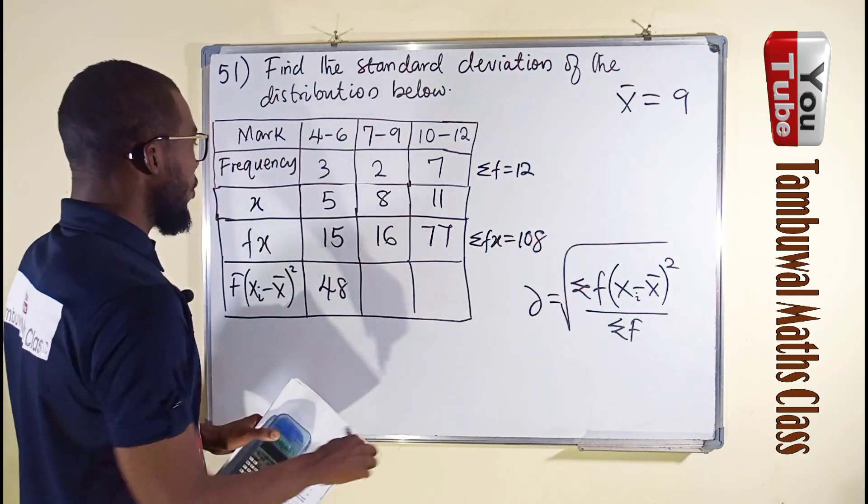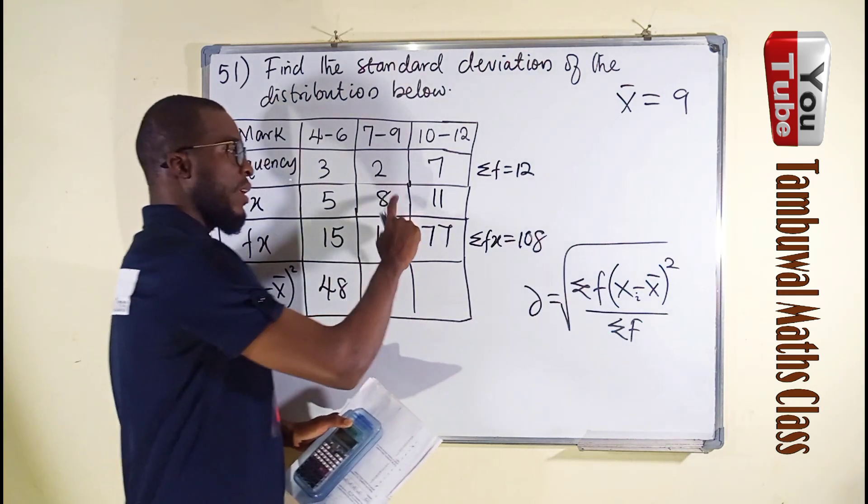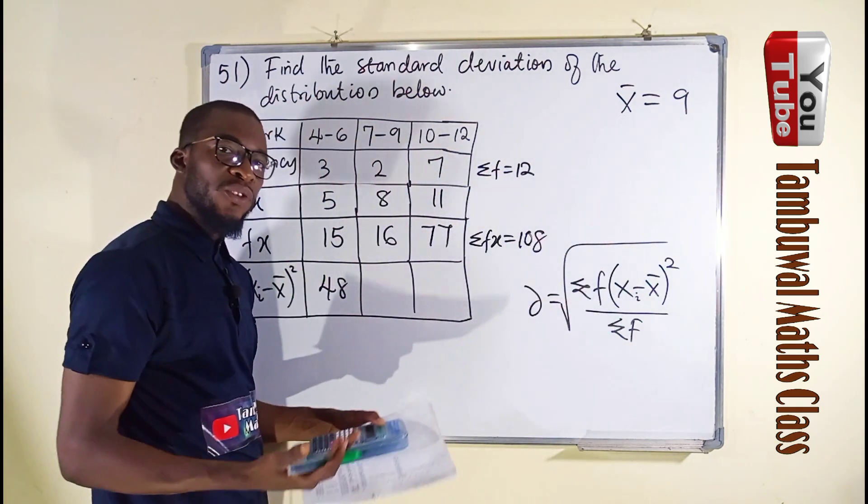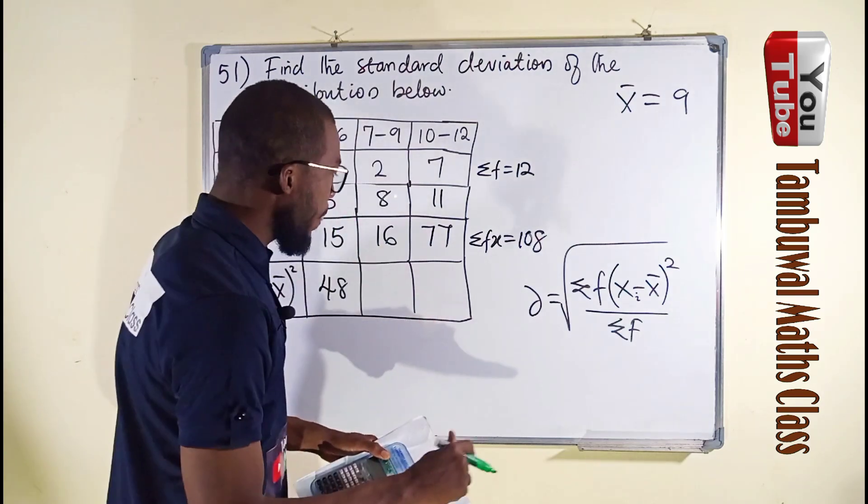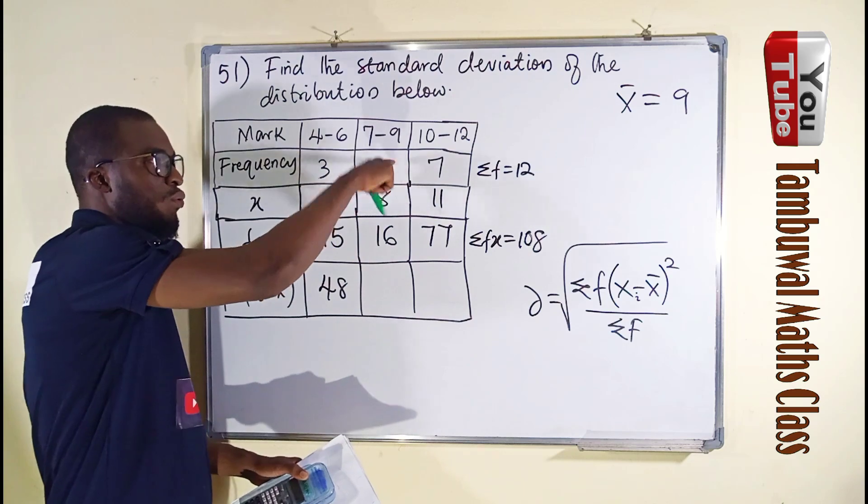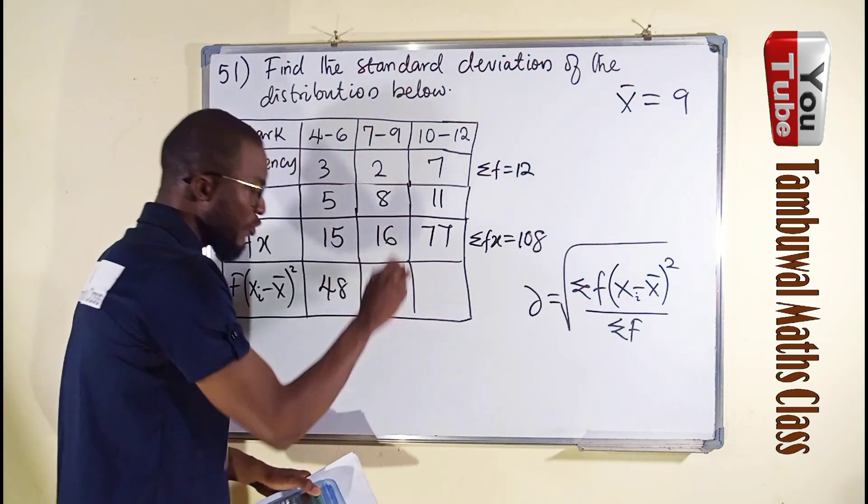Then we take the second x, it's 8. 8 minus 9 is negative 1. Negative 1 squared is positive 1. Then times the frequency of that class, which is 2, 2 times 1 is 2.